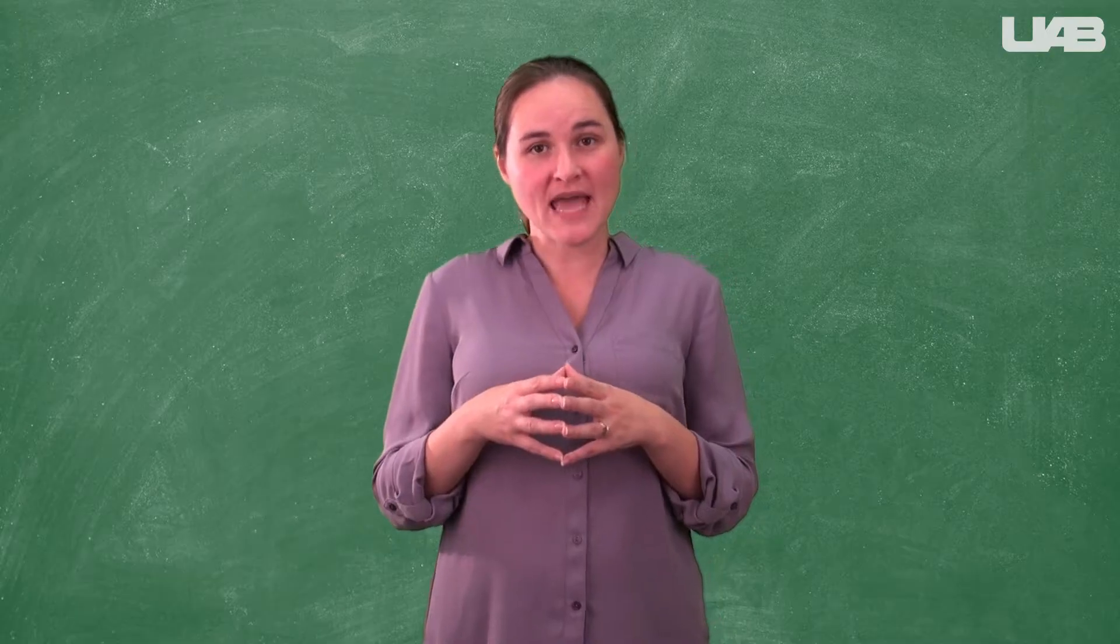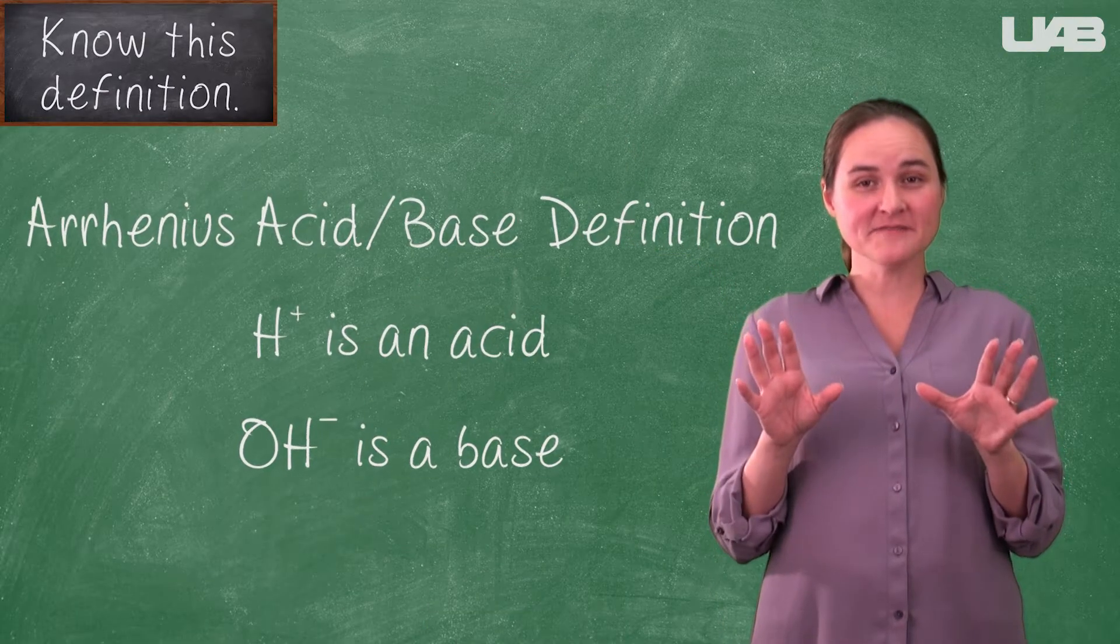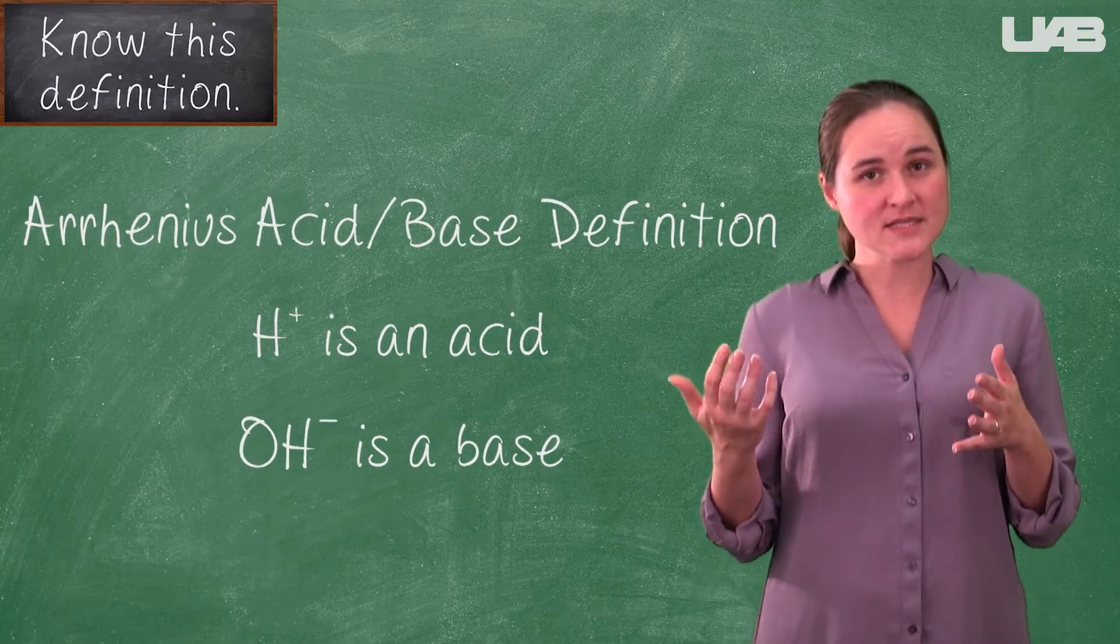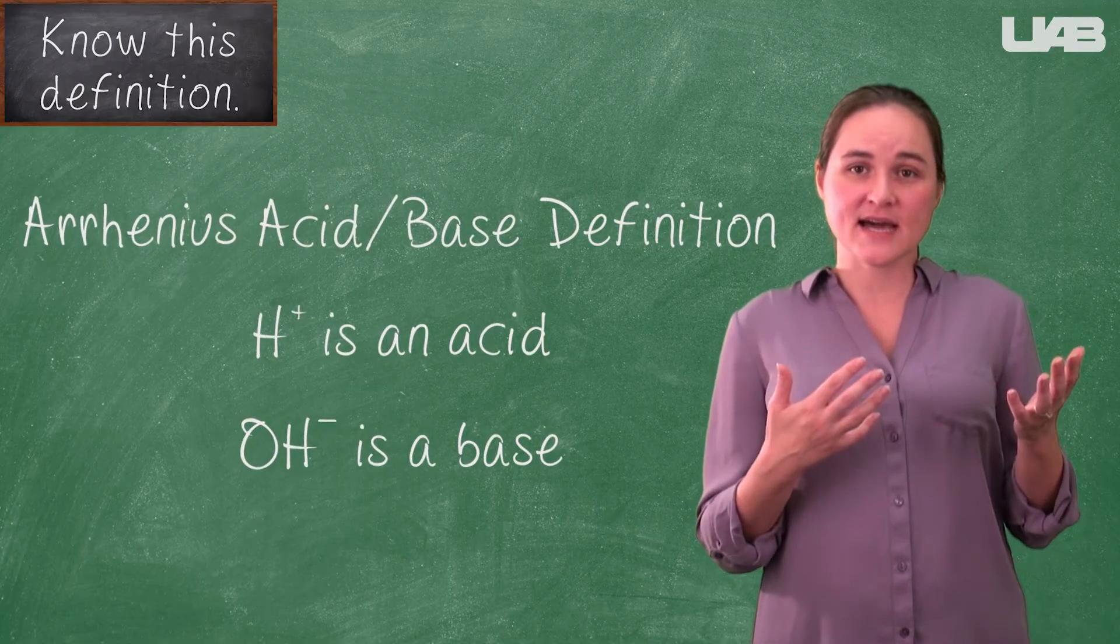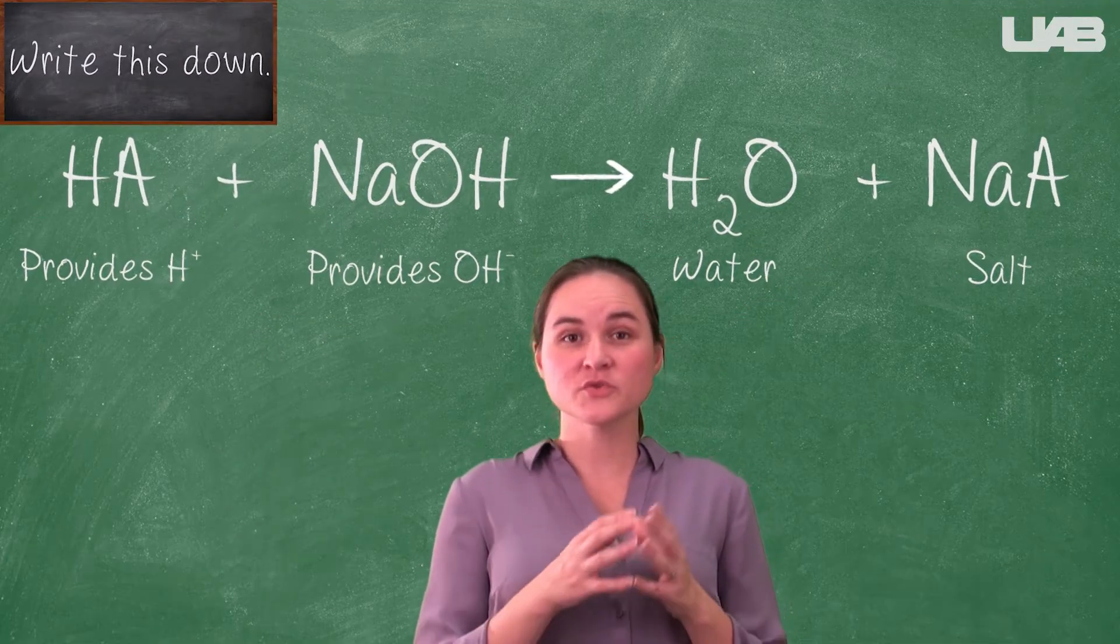If we know how much base we add, then we know how much acid is in the flask. In the simplest definition of an acid, we say that an acid provides a hydrogen ion, or H+, and a base provides a hydroxide ion, or OH-. When the acid and base react, they produce water and a salt.